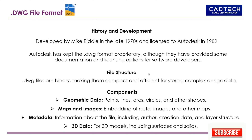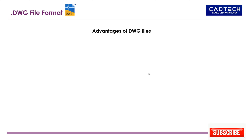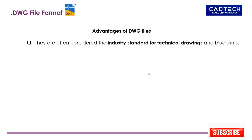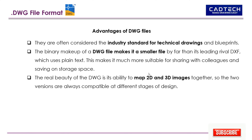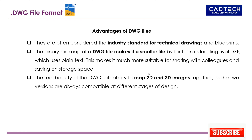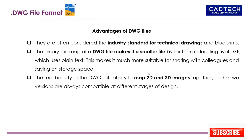Advantages of DWG files: They are often considered the industry standard for technical drawings and blueprints. The binary makeup of a DWG file makes it a smaller file by far than its leading rival DXF, which uses plain text, making it more suitable for sharing and saving storage space. The real beauty of the DWG is its ability to map 2D and 3D images together, so the two versions are always compatible at different stages of design.